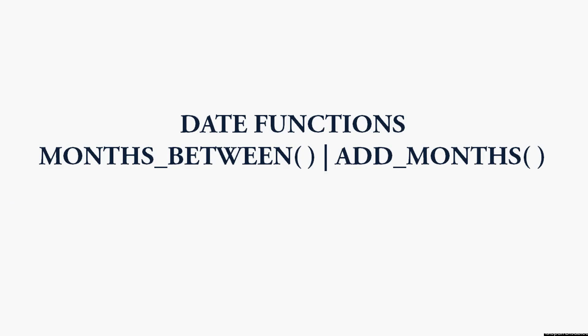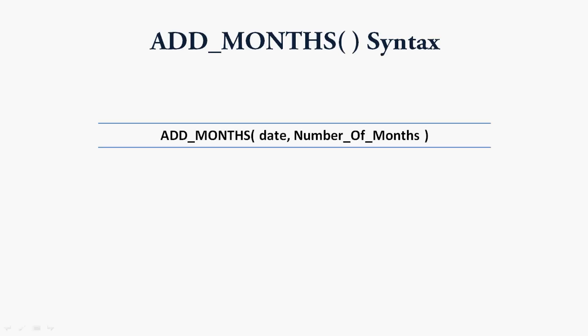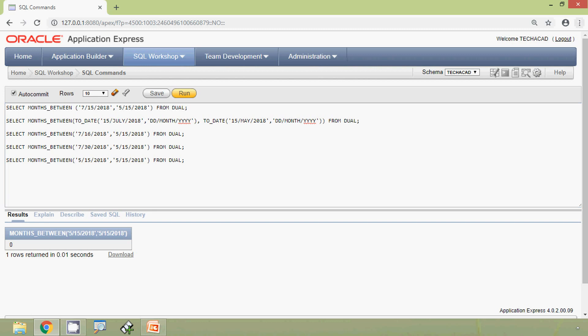Now we will go to the next function: ADD_MONTHS. This function returns a date with a specified number of months added to the given date. The syntax is: ADD_MONTHS(date, number_of_months). We will see some examples so that it will be more clear.